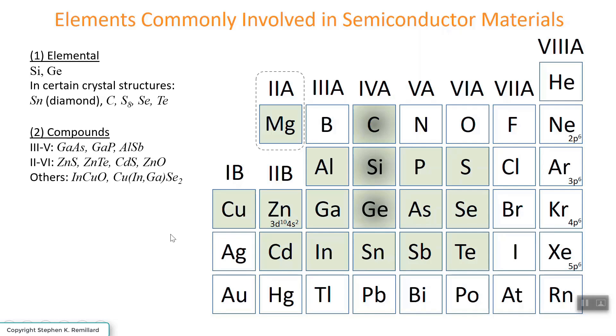There are compounds that you can form from both the 3-5 columns and the 2-6 columns. So 3-5 semiconducting materials include gallium arsenide, gallium phosphide, and aluminum antimonide. There are 2-6 compound semiconductors, such as zinc sulfide, zinc and sulfur, zinc and tellurium, and so on.